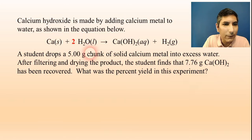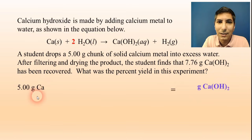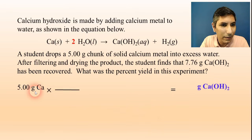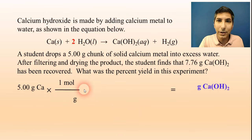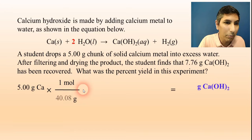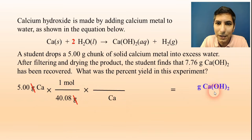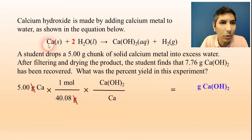Starting with 5.00 grams of calcium, step one: convert to moles — grams on the bottom, one mole on top. The atomic mass of calcium is about 40.08 grams per mole. Grams cancel. Step two is the mole ratio: calcium on the bottom, calcium hydroxide on the top. Looking at the balanced equation, this is a one-to-one mole ratio, so we put ones in. Calcium cancels.